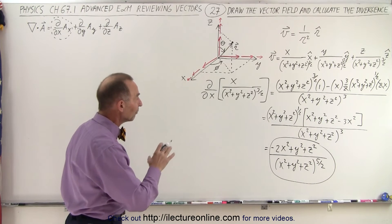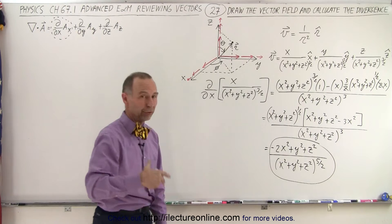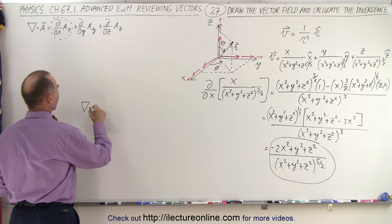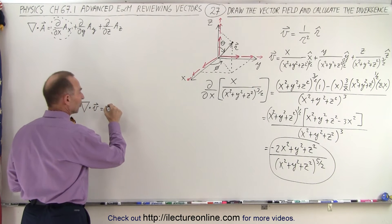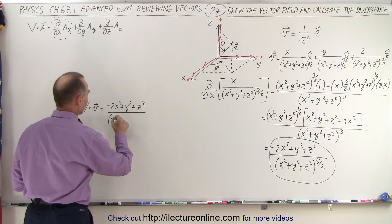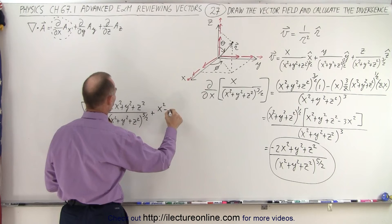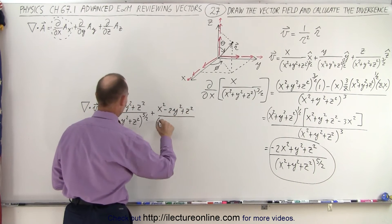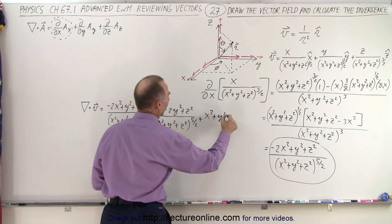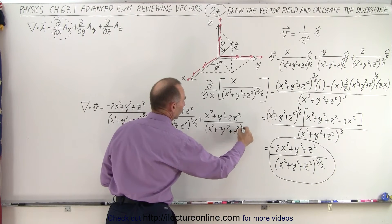Notice that if we do the same thing for y and for z, we'll get the same result, but instead of minus 2x squared we'll get minus 2y squared for y, and minus 2z squared for z. So for all three components combined, the del operator dot v equals: the x component gives minus 2x squared plus y squared plus z squared over the quantity to the 5 halves power, plus x squared minus 2y squared plus z squared over the same denominator, plus x squared plus y squared minus 2z squared over the same denominator.